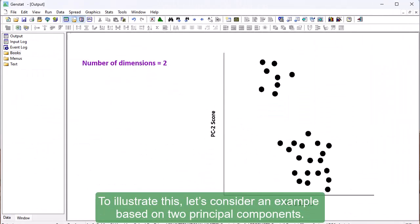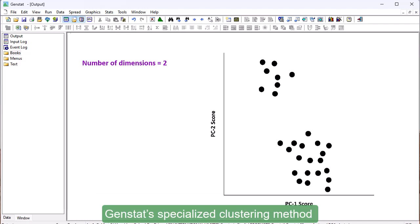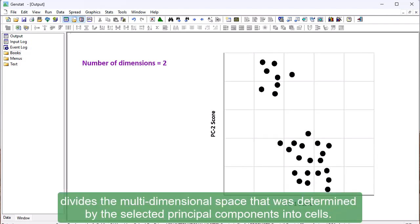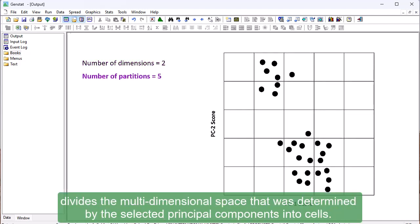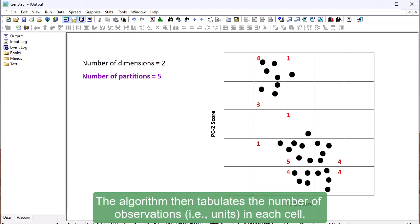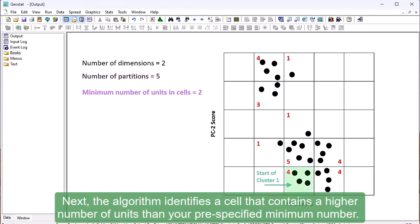To illustrate this, let's consider an example based on two principal components. GENSTAT's specialized clustering method divides the multidimensional space that was determined by the selected principal components into cells. The algorithm then tabulates the number of observations, i.e., units, in each cell.